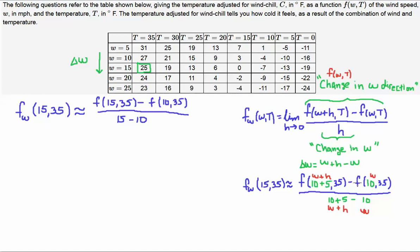And then I'm subtracting the number before it, which is f of 10,35. And then I'm putting that over 10 plus 5 minus 10. Once again, this h is the increment of 5. The 10 minus 10 cancels and I'm left with a 5 in the denominator. So, this is essentially 15 minus 10 in the denominator.